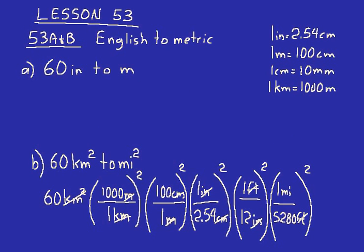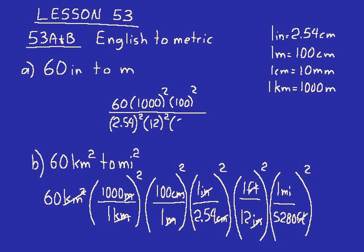Now I need to simplify that. I went ahead and erased the solution to practice problem A so I'd have somewhere to write this. And so let's just work on the numerator first. And we would have 60 times 1,000 squared times 100 squared times 1 times 1 times 1. So those all just equal to 1. We don't write those. Over 2.54 squared times 12 squared times 5280 squared. And then our units at the end, can't forget those, square miles.